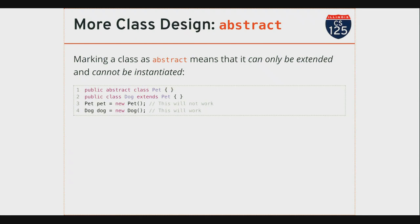So the last little bit of Java buzzword class bingo: abstract. What does it mean to mark a class as abstract? It means I cannot instantiate that class — I can extend it, but I can't instantiate it. An abstract class can never be on the right side of 'new.' Here I've marked Pet as abstract — I can't actually create a Pet, I can only descend from that class. This turns out to be pretty useful in certain cases.